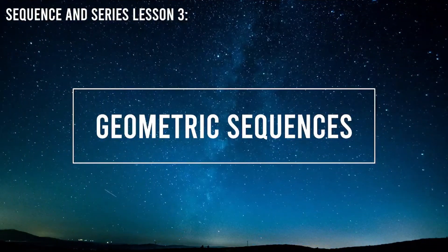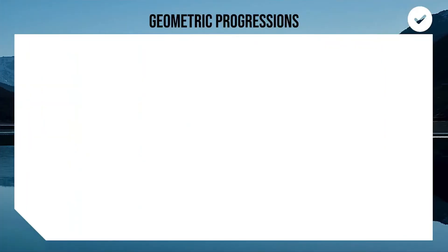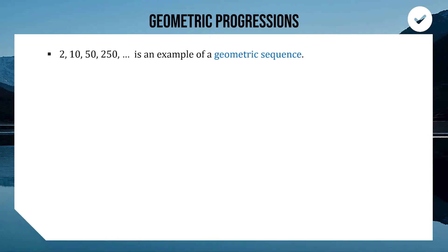Today we are looking at the other type of patterns we study in advanced maths, which are called geometric sequences and geometric series. A progression is arithmetic if between each of your terms you are adding the same number — that's what we looked at in the last couple of videos. For a progression to be geometric, it means that you are multiplying by the same number each time.